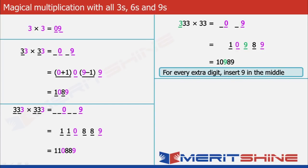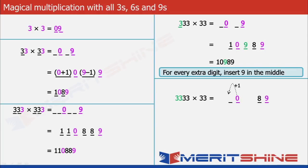Now let us try 3333 × 33. Again, we will treat it as 33 × 33 first. So we put down 09 and add 1 blank each to the left of 9 and 0. Then decrease 9 by 1 and put 8 to the left of it. Increase 0 by 1 and put 1 to the left of it.